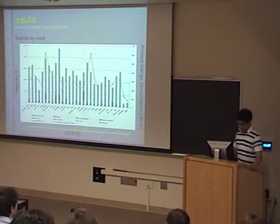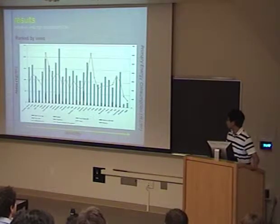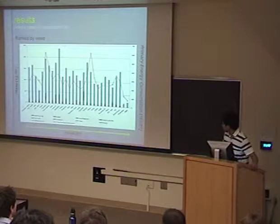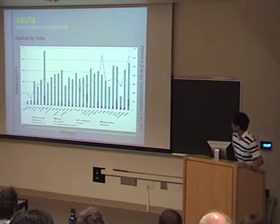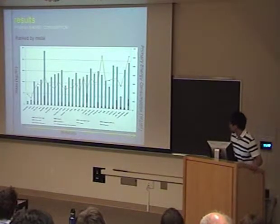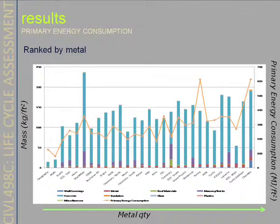This next slide is in terms of wood. The primary energy consumption of using more wood is less than using concrete, and the trend looks like it's decreasing. For metal, the primary energy consumption increases with increasing metal used in our buildings — the more metal in the building, the higher the energy consumption.